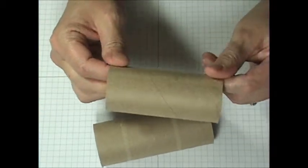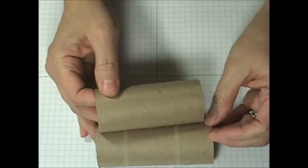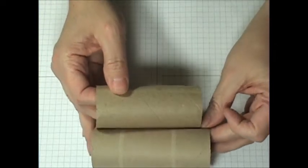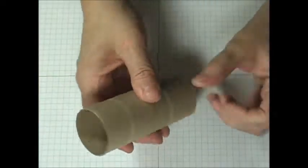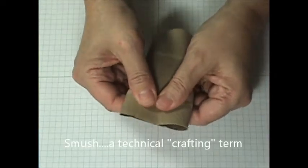All right, so what you're going to do: you're going to choose your toilet paper roll and then you're simply going to smush it together, flatten it out.